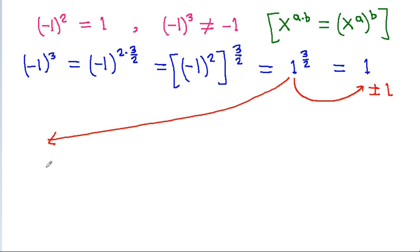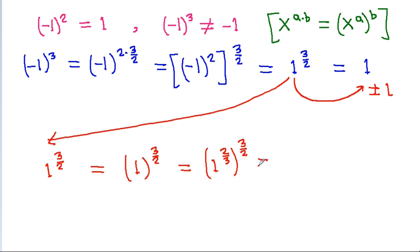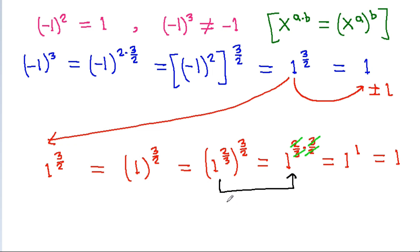So from here, we have 1^(3/2). We can write 1 as 1^(2/3), then raise it to the power 3/2, giving 1^(2/3 × 3/2). The 2s and 3s cancel, so it equals 1^1 = 1. My question is: is this step — applying x^(a·b) = (x^a)^b — actually correct?